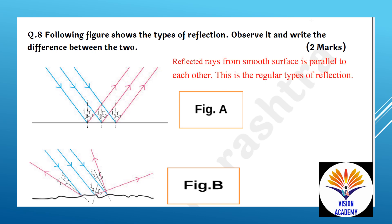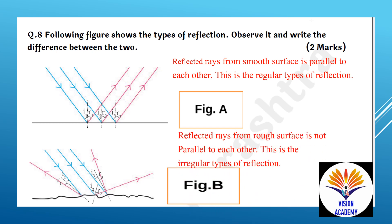In figure A, reflected rays from a smooth surface are parallel to each other — this is regular reflection. In figure B, the reflected rays from a rough surface are not parallel to each other — this is irregular reflection.